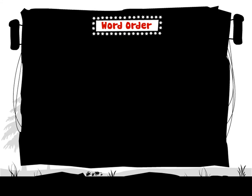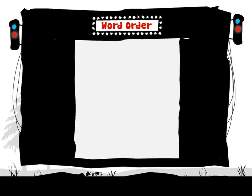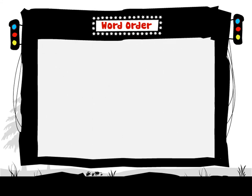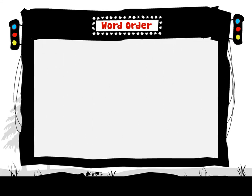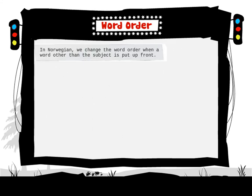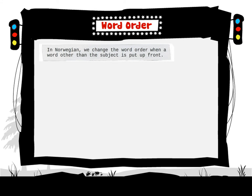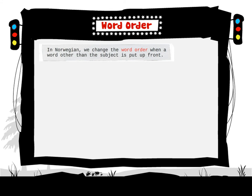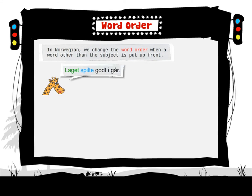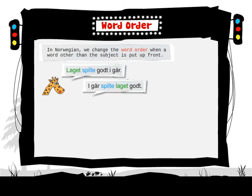Word order. In Norwegian, we change the word order when a word other than the subject is put up front. For example: 'Lage spilte godt i går.' becomes 'I går spilte Lage godt.'